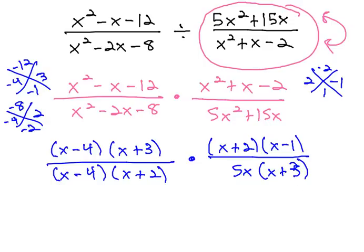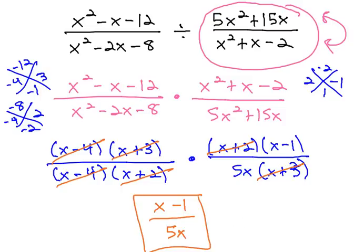Now, we can go through and divide out our common factors of x minus 4, x plus 2, and x plus 3, and we get our final answer of x minus 1, over 5x, by factoring first, then reducing.